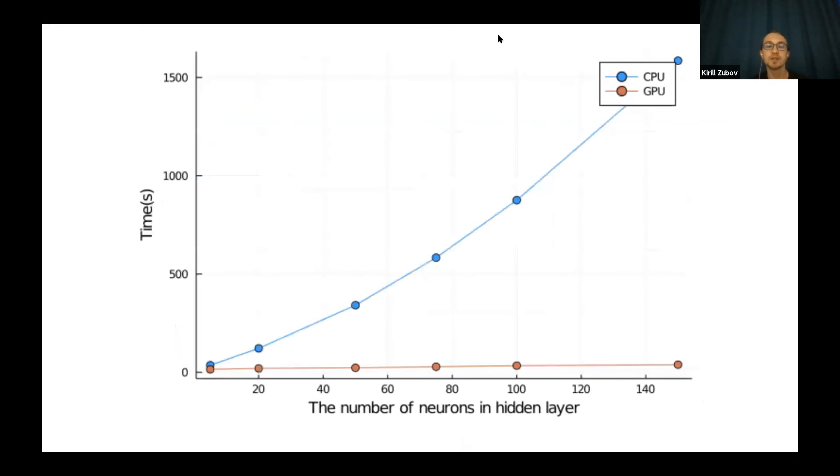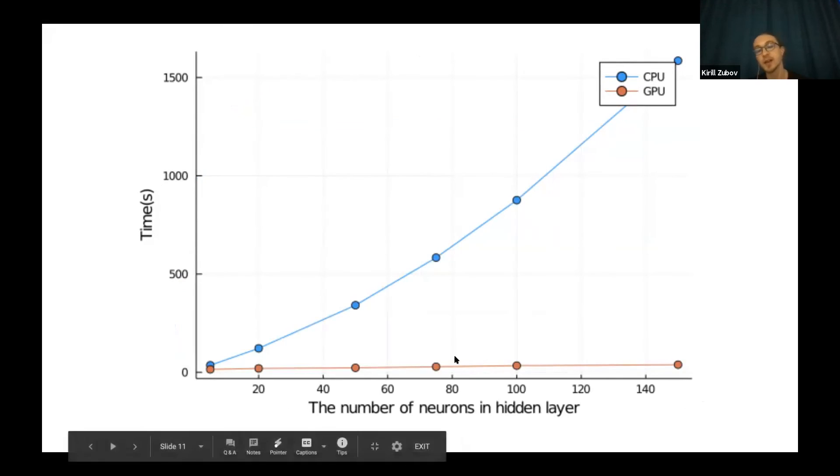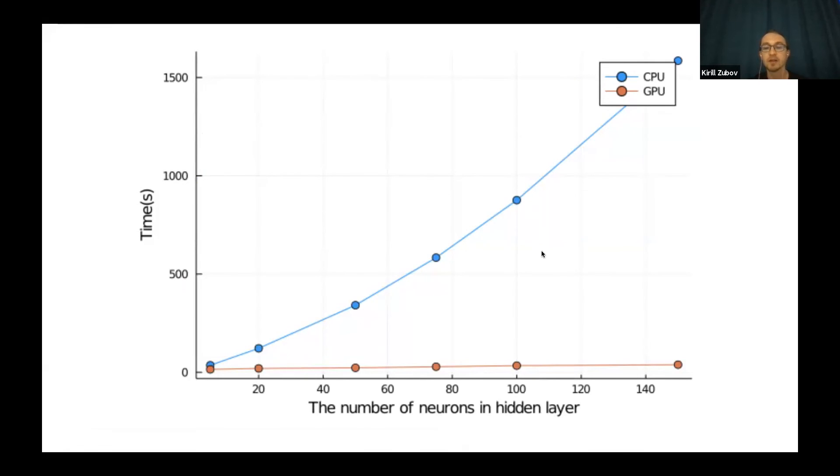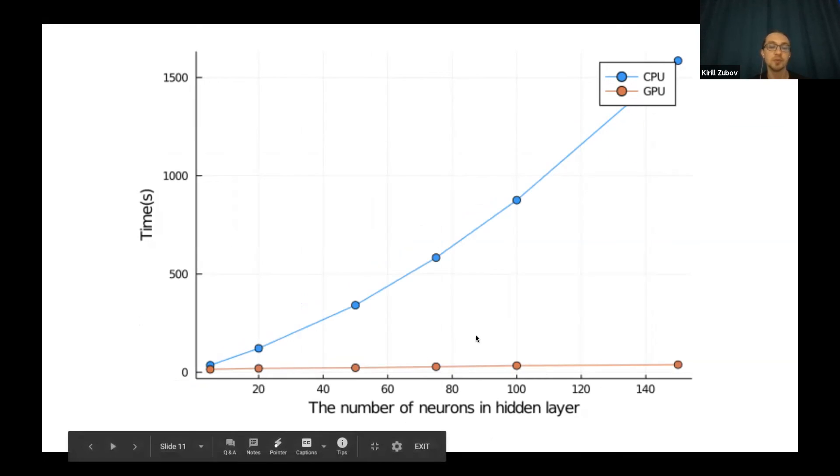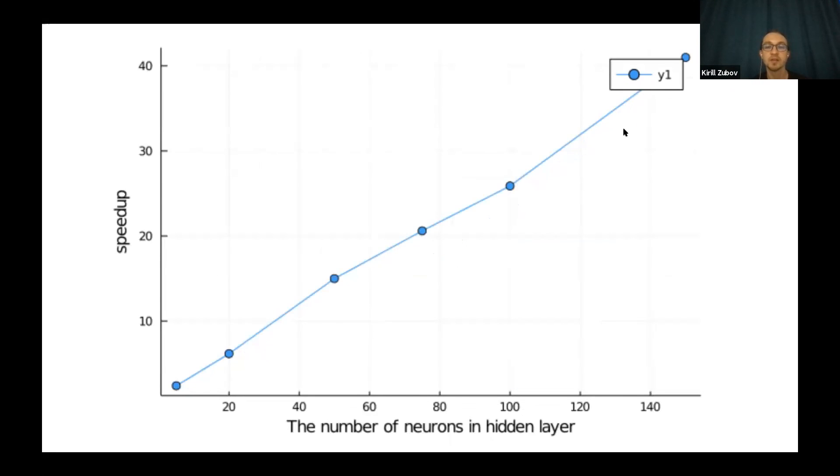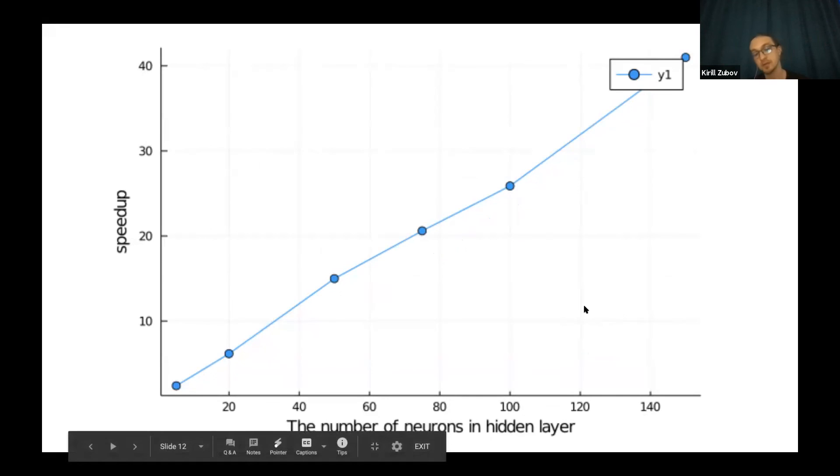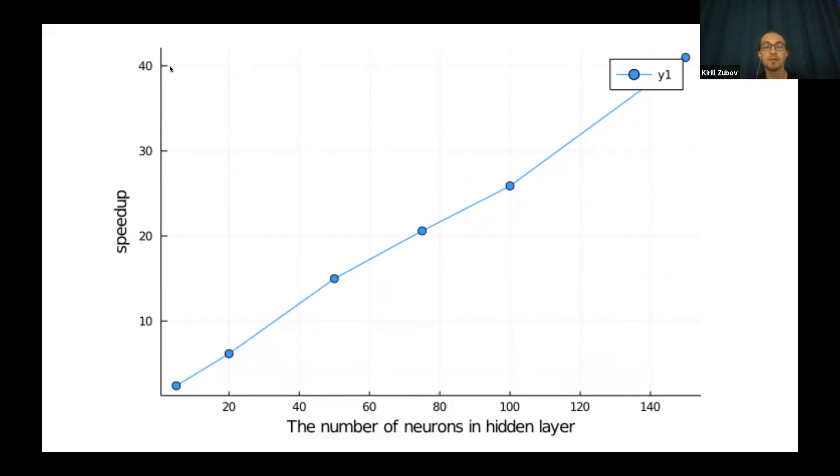So the next slide is something similar, but in this benchmark, we're changing the hidden layer in the neural networks. So the blue line is CPU, red line is GPU. And this is the time. So we can see that actually for this number of hidden neurons, GPU is not sensitive and it's probably constant time for any number of neurons in the hidden layer. And for 140 neurons in the hidden layer, we have speedup in 40 times. Probably it's very much.